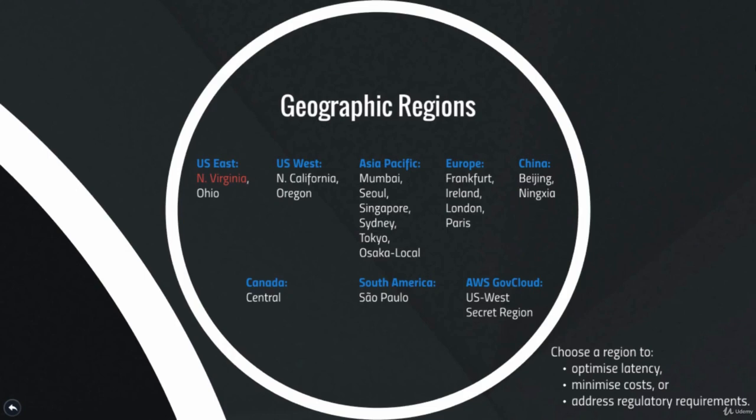The AWS GovCloud is located on the US West Coast and is specifically for US government organizations. There is also an AWS secret region — and I can't tell you where that is because it's a secret. That region is specifically for US government intelligence organizations. And yes, the CIA is a customer of AWS.